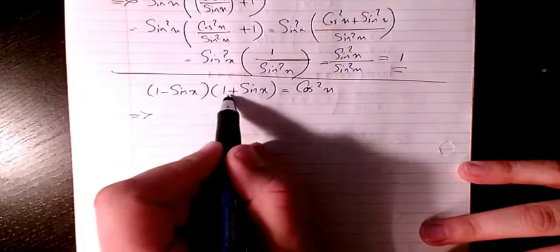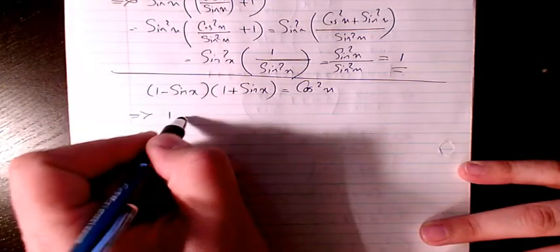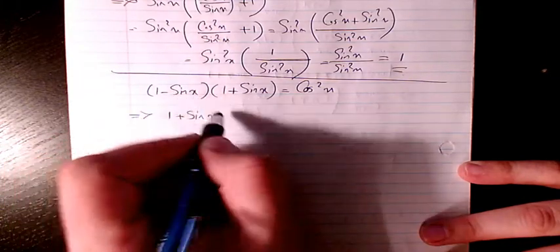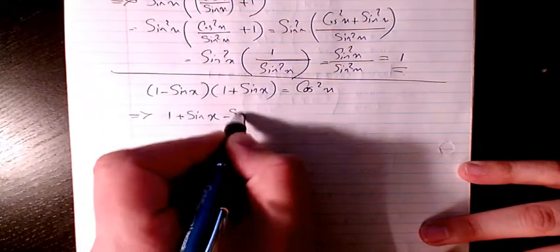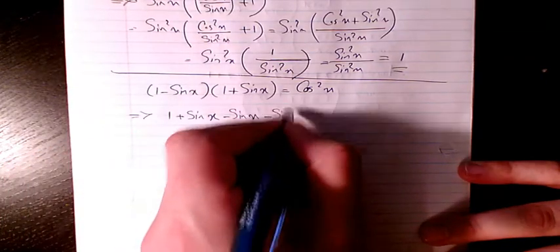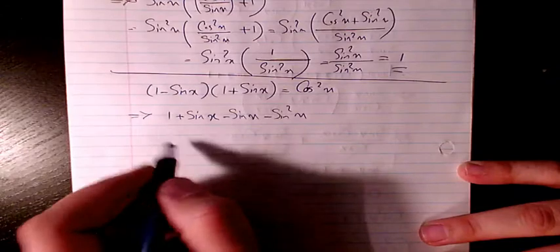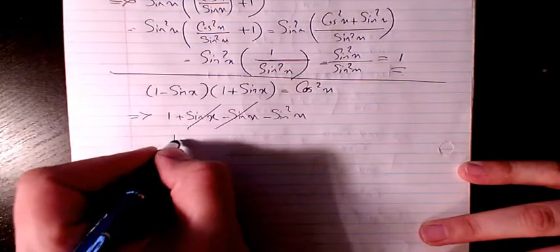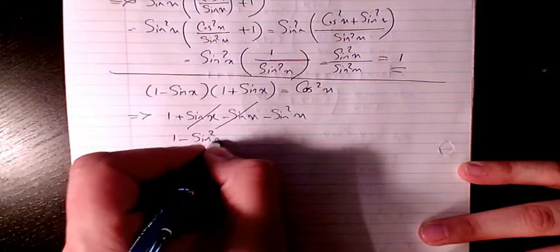If I multiply 1 times 1, 1 times sine x, here I have negative sine times 1 is going to be negative sine, and here I have negative sine times sine is going to be negative sine squared x. So basically this sine x and negative sine x, they cancel out, it's going to be 1 minus sine squared x.